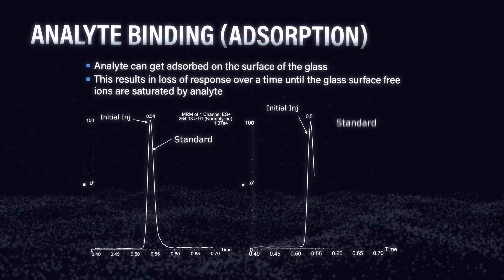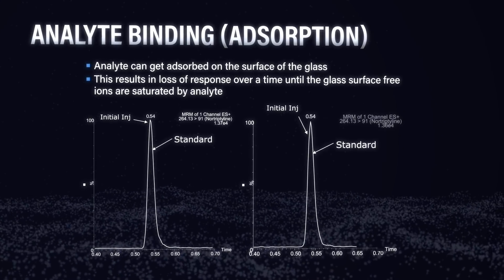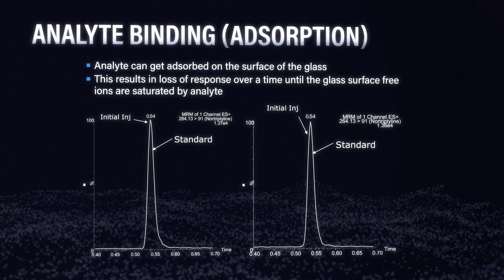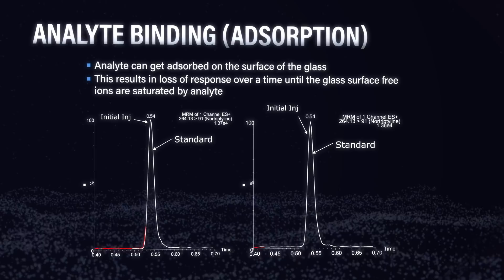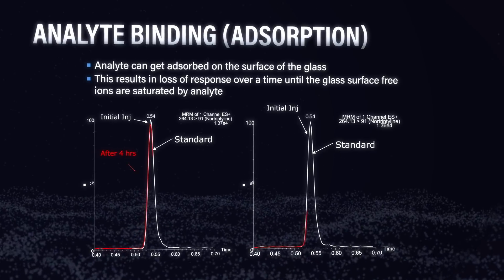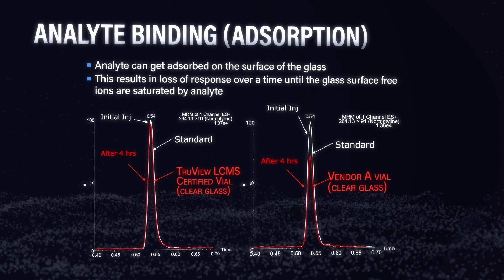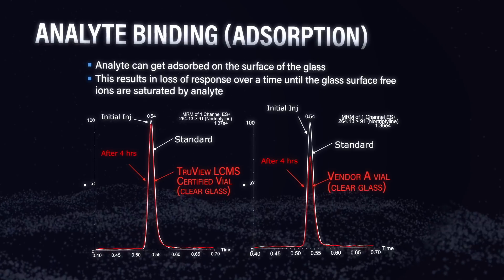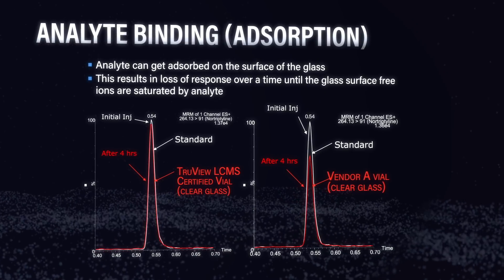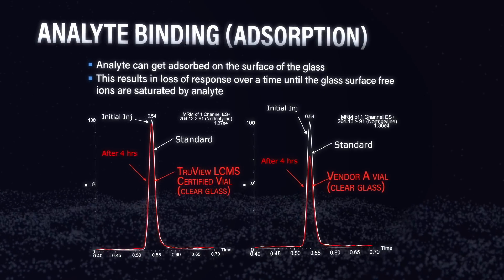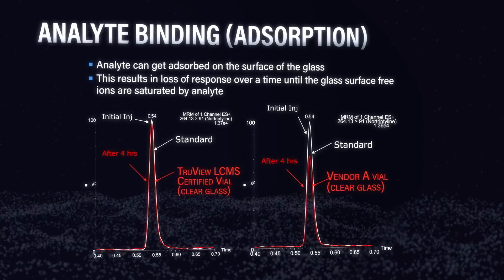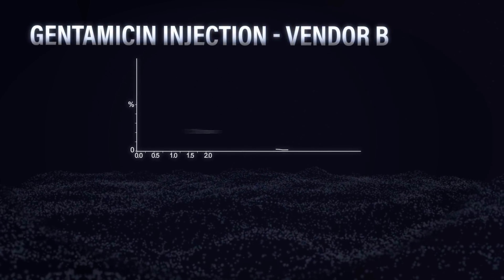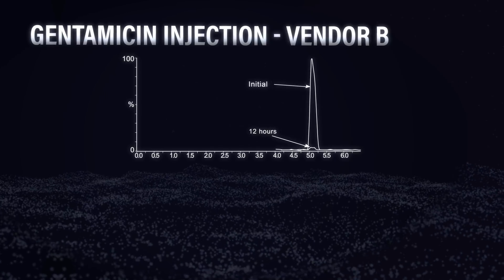We also took a look at the effect of the sample container on two different analytes. Looking at nortriptyline, we can see a big difference between the initial injection and after the nortriptyline has sat in the vial for about four hours — we've lost quite a bit of signal because the analyte has actually absorbed into the vial. It looks like the vial is actually sucking up the analyte.